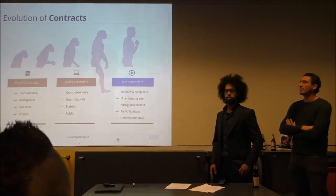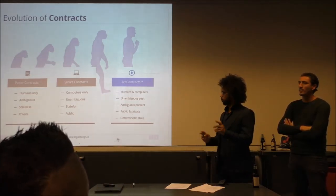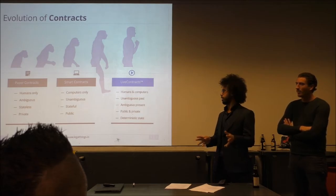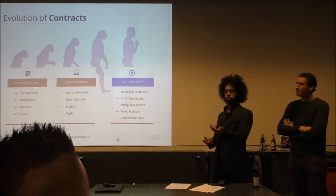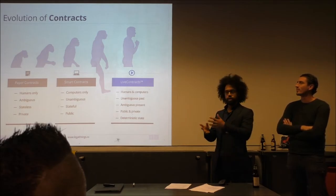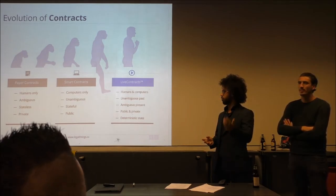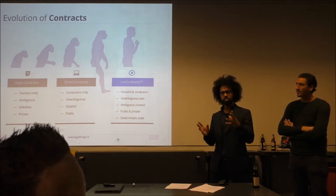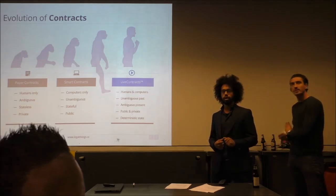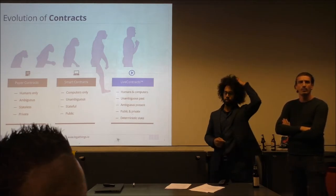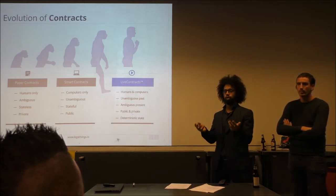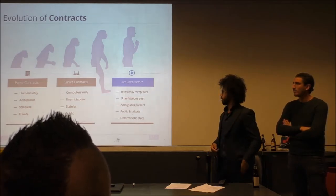Then Ethereum came up with smart contracts, which are something pretty different. They were intended for computers — you write them in a proper language and they're compiled to be interpreted by computers. They use unambiguous rules, so there's no discussion possible. They just base on facts that are on the blockchain. Smart contracts are stateful: they contain data and the data can change. And of course they're public. Each node that runs Ethereum needs to be able to run your code, so it also needs the data to run that code.